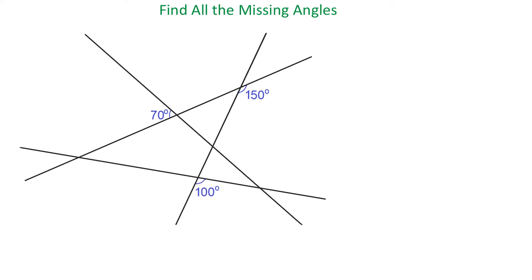In this figure, we have four intersecting lines and three angles that measure 70 degrees, 150 degrees, and 100 degrees. We need to find the measures of the rest of the formed angles.